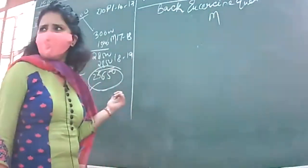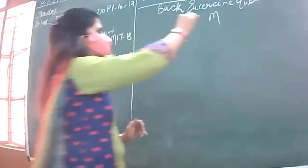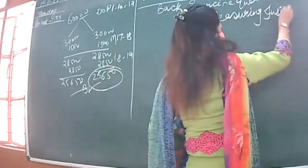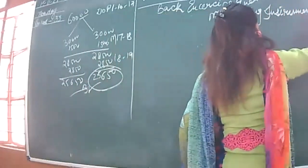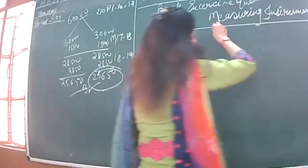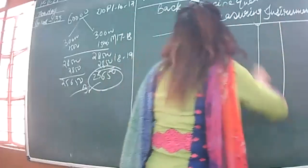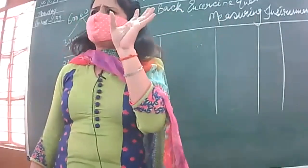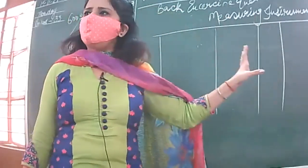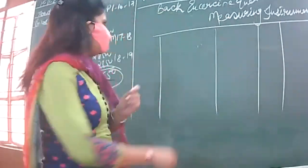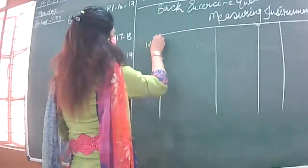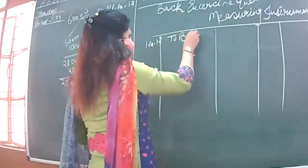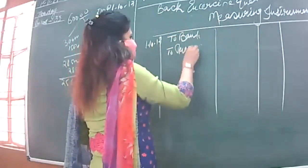Have you checked the balance figure — 25,650? Now, the working note: for 1st October, I paid one fourth by cheque, so debit measuring instruments and credit bank 15,000, and credit Precision Company Limited 45,000, because three-fourths is still to be paid. On 1st November, debit Precision Company to bank 45,000.